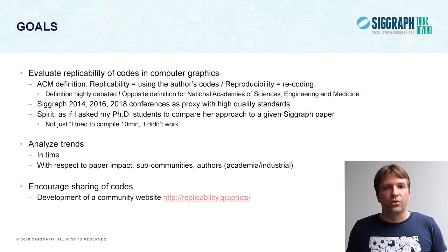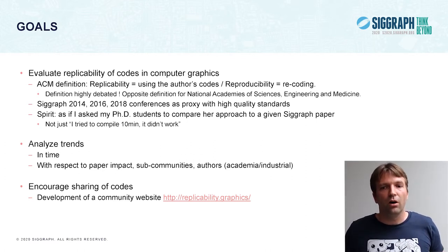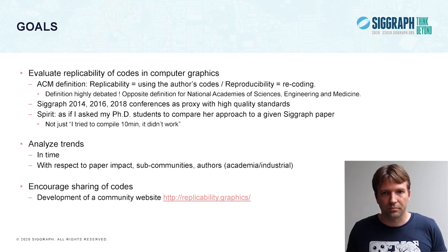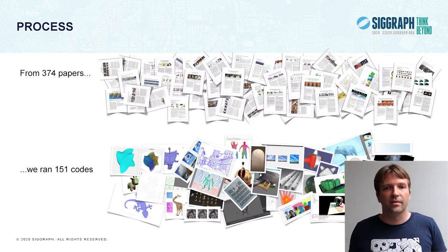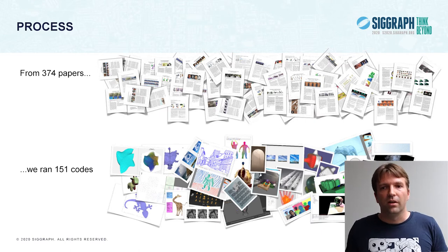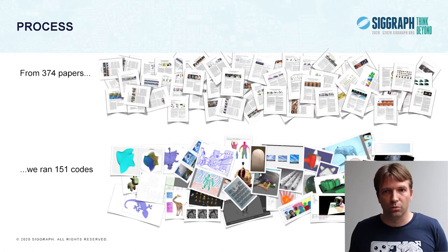We also analyzed trends. And our third goal is to encourage the sharing of codes, mostly via a community website. To do that, we analyzed 374 papers. And out of all these papers, we ran 151 codes, or at least attempted to do so.